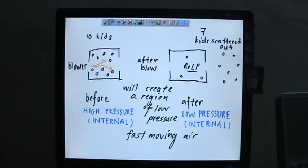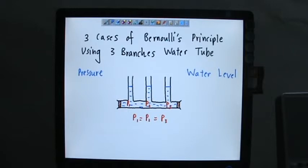So as we move on, we want to consider three cases of Bernoulli principle using three branches water tube. Okay, in this case we have two sides being closed - the entrance and the other opening of this water tube are closed already. So the water inside is still water. The water is not moving at all.